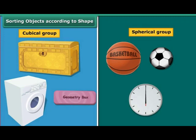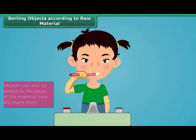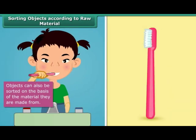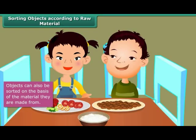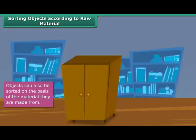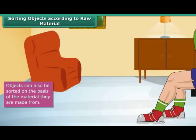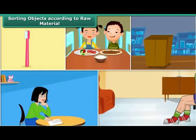The first object you use as soon as you wake up is your toothbrush — it is made of plastic. The plate you have breakfast in is made of melamine or stainless steel. The cupboard you keep your books or clothes in is made of iron or wood. The books you read are made of paper. The shoes you wear are made of leather, canvas, or rexin. Thus all objects in our daily life can be classified on the basis of the raw materials used in making them.